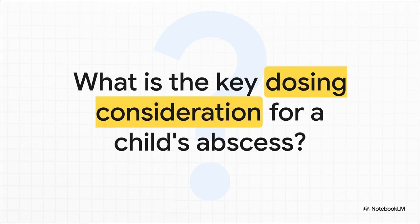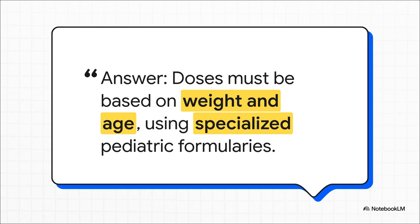Last one. This case adds a critical variable: the patient is an eight-year-old child. What is the absolute number one golden rule when thinking about antimicrobial dosing in this patient? The answer, of course, is: children are not just small adults. You never guess or simply scale down an adult dose. Dosing requires precise, careful calculation based on that child's specific weight and age. You must always use a dedicated pediatric formulary to ensure you're being both effective and, most importantly, safe.